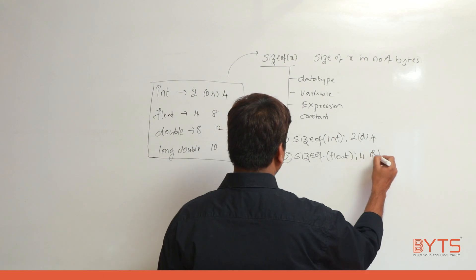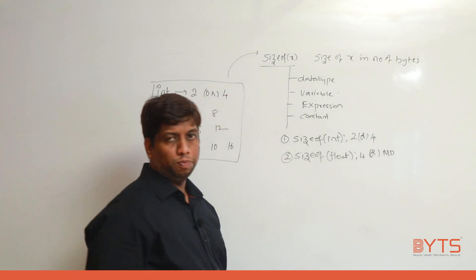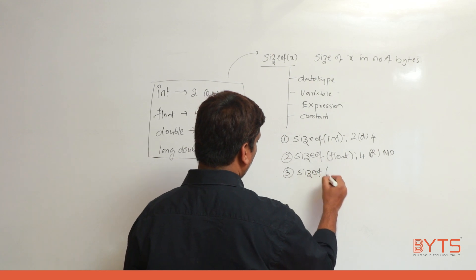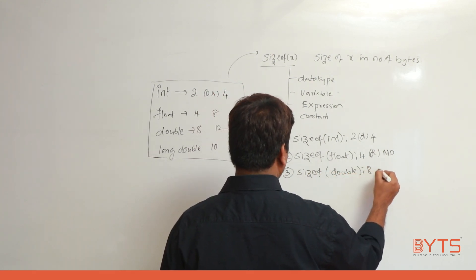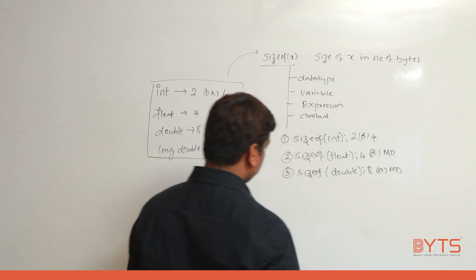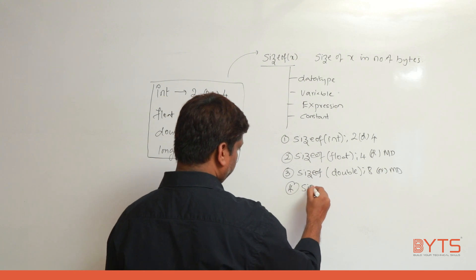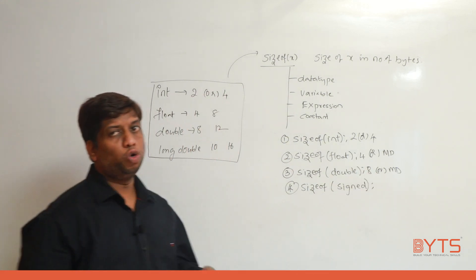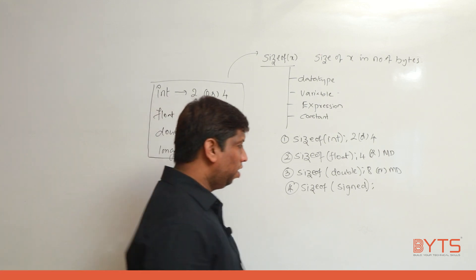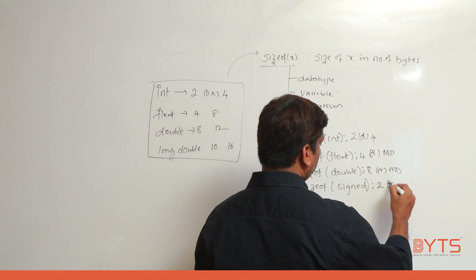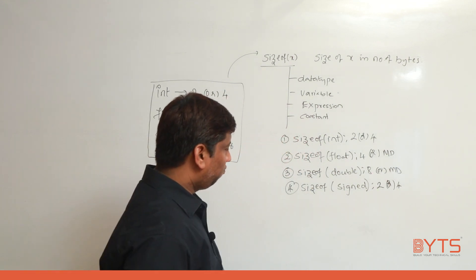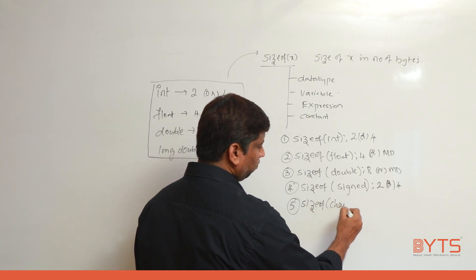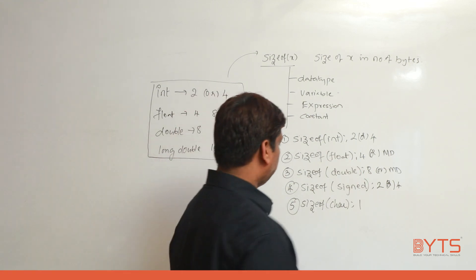sizeof(float) is 4, or simply machine dependent — meaning size varies from machine to machine. sizeof(double) could be 8 or machine dependent. sizeof(signed) — since signed could be short or long — the answer is 2 or 4. sizeof(char) is 1; the character data type is always 1 byte.